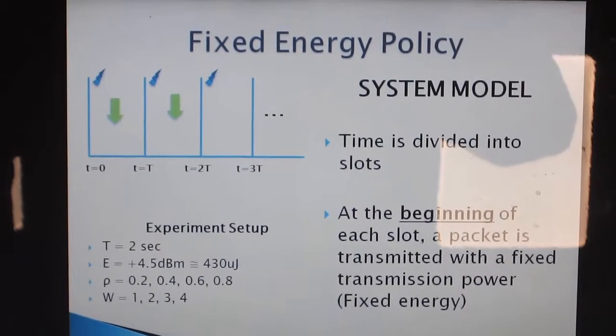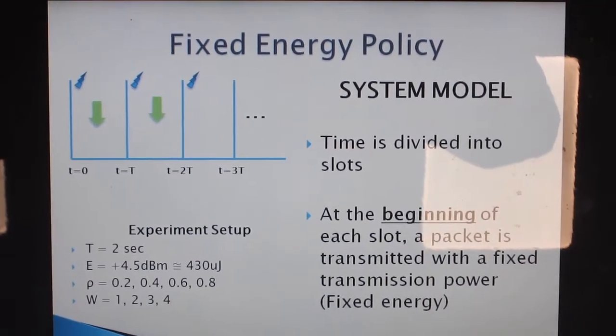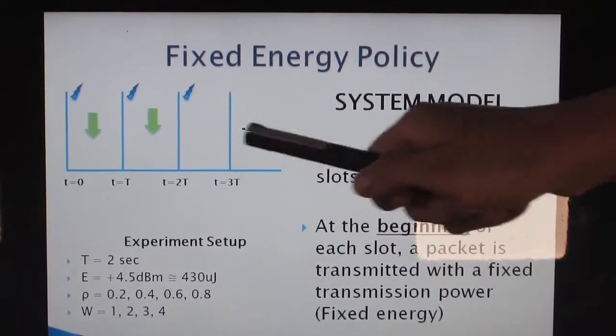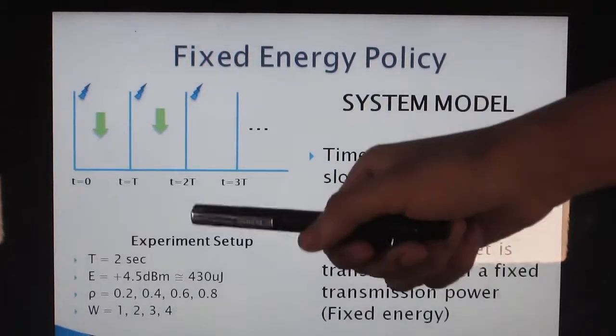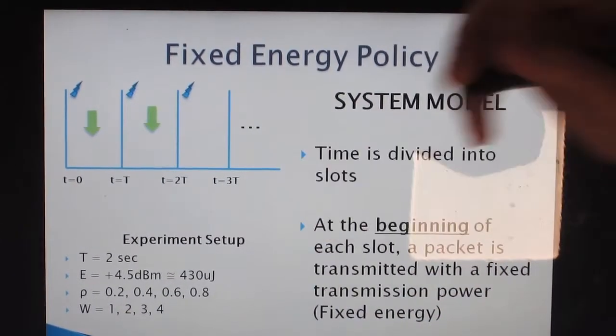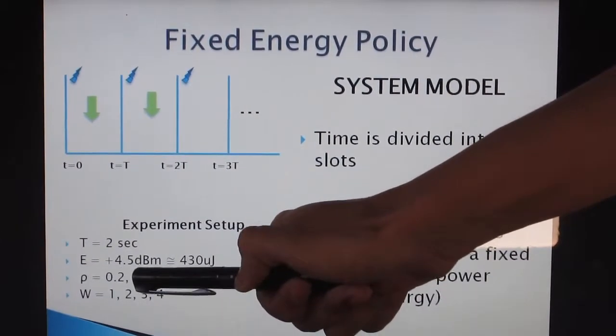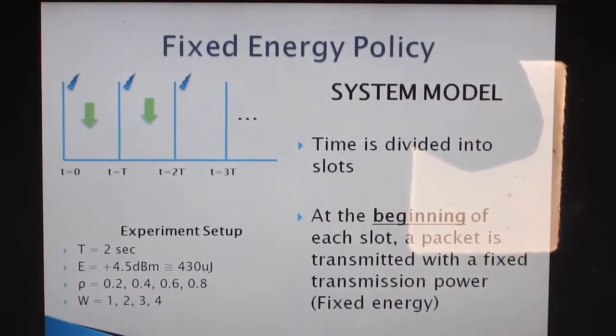This is a demonstration of fixed energy policy. This is the system model of fixed energy policy. Time is divided into slots of 2 seconds. The energy injection follows a Bernoulli distribution where rho represents the injection probability and W represents the injection intensity.